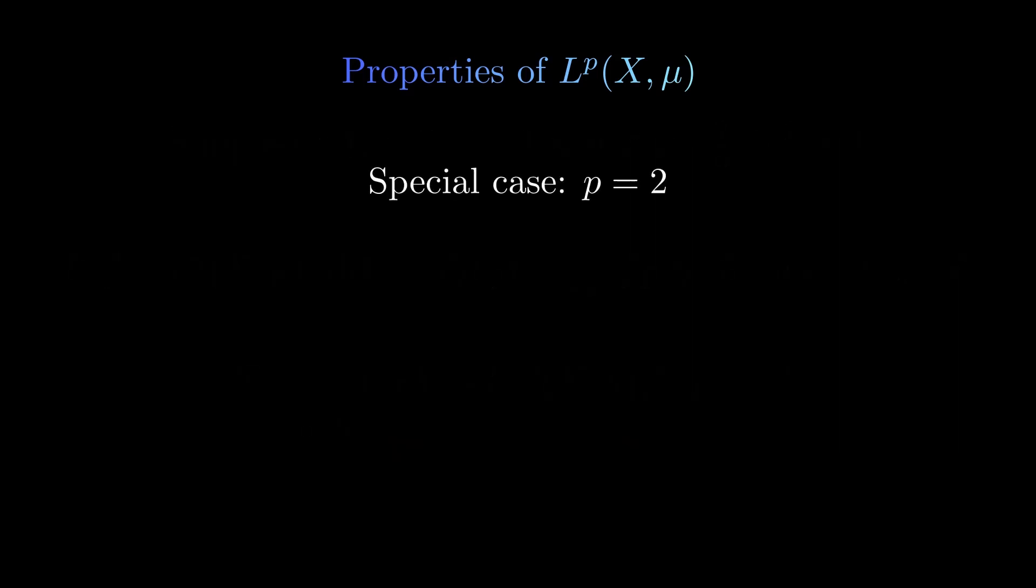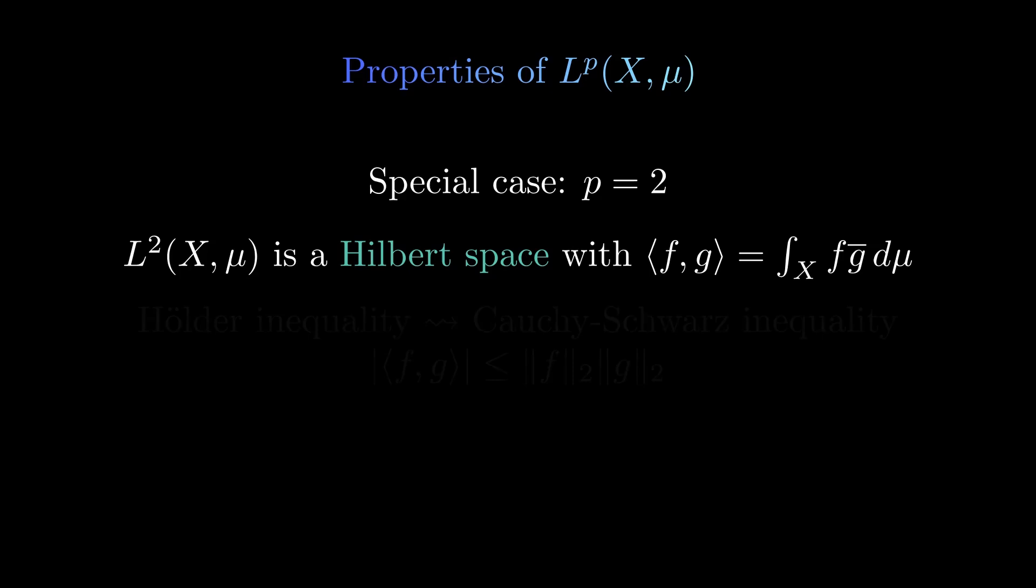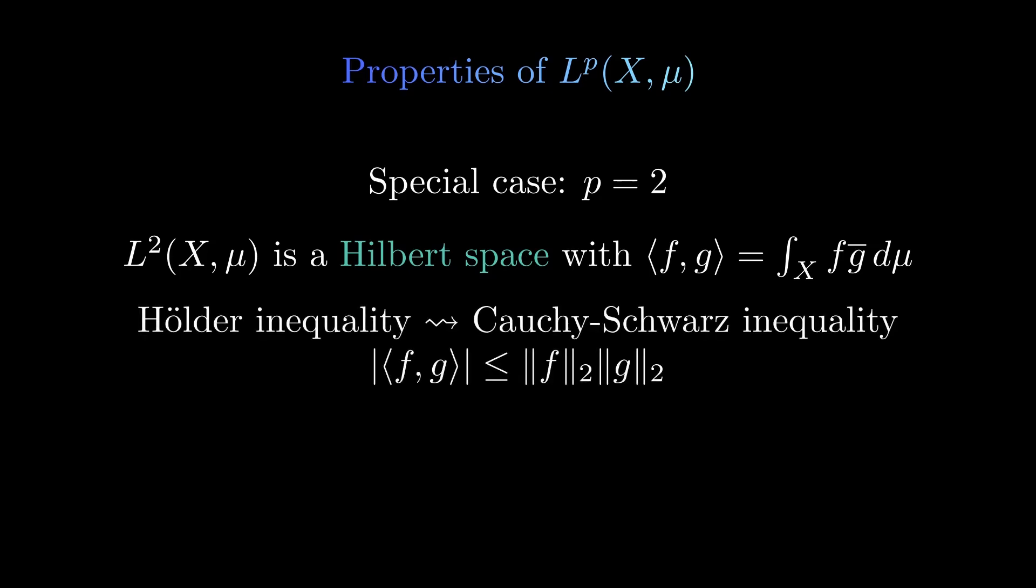Finally, let's look at the special case where p is equal to 2. Then p is its own conjugate and the L^2 space is a Hilbert space, so we may define an inner product which induces the norm. Then the Hölder inequality is here called the Cauchy-Schwarz inequality and bounds the inner product by the norm. We know far more about Hilbert spaces than about Banach spaces, so the L^2 spaces provide many techniques to understand a function better, once we have shown that the function is in an L^2 space.